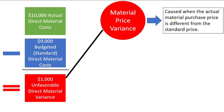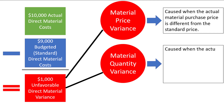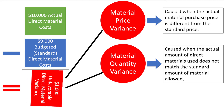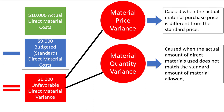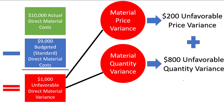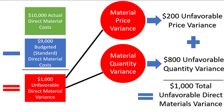Second, we might have a material quantity variance, which is caused when the actual amount of direct materials used does not match the standard amount of materials allowed. Maybe there were some mistakes in production, causing more materials to be used than was initially planned, creating the variance. In other words, the $1,000 unfavorable material cost variance in our example can be broken apart into a price variance component and a quantity variance component. Let's say that higher prices contributed to $200 of the unfavorable variance, and material waste contributed to the other $800, totaling the $1,000 unfavorable direct materials variance.